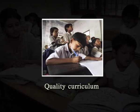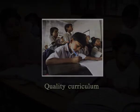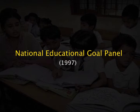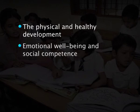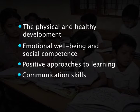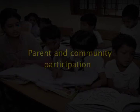The curriculum in early childhood education centers should outline clear goals across a range of developmental areas to which educators and children can aspire. For instance, the five goals proposed by the National Educational Goal Panel in 1997, meant to be treated and pursued equally, are: physical and healthy development, emotional well-being and social competence, positive approaches to learning, communication skills, and cognition and general knowledge.